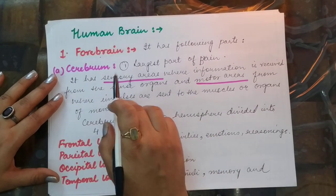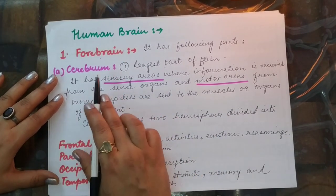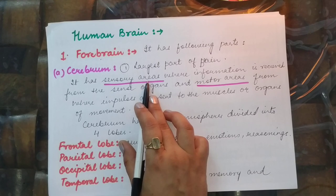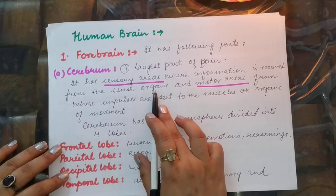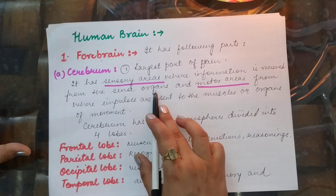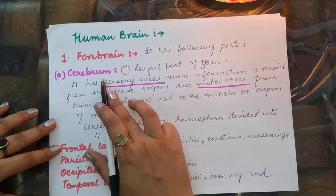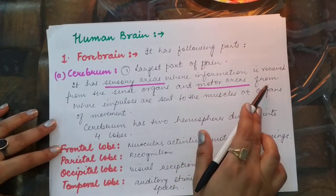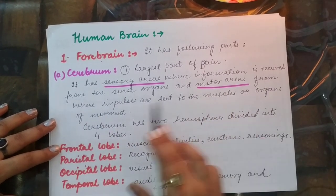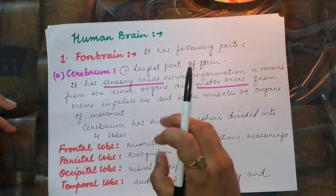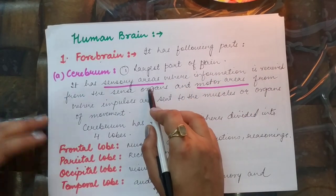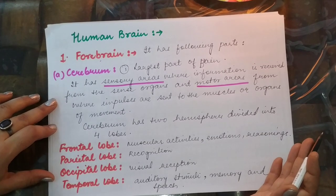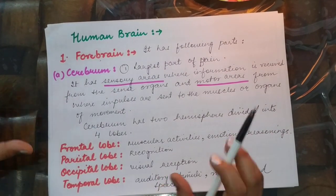The human brain is divided into three parts: forebrain, midbrain, and hindbrain. The forebrain's first and largest part is the cerebrum. The cerebrum has sensory areas, where information from the five sense organs arrives, and motor areas, from which impulses are sent to muscles or organs. So both stimulus reception and response generation occur in the cerebrum.